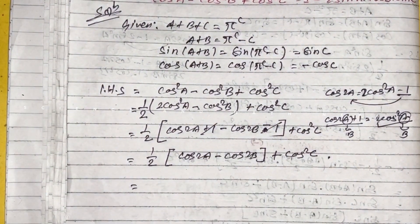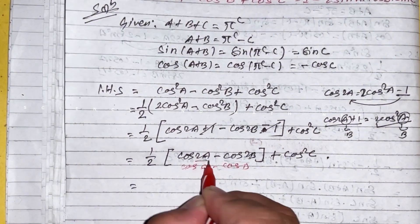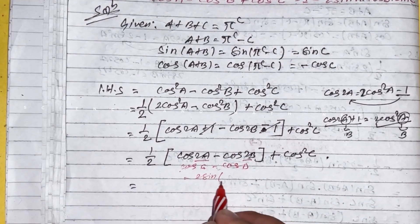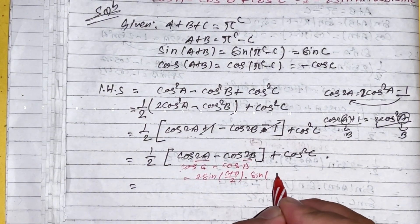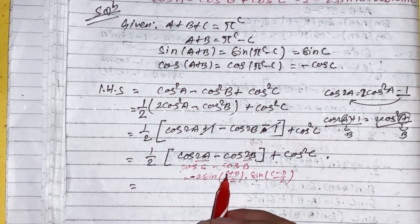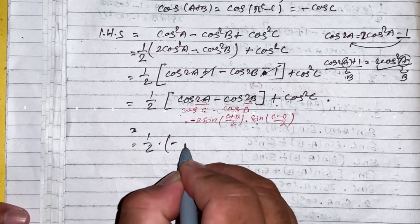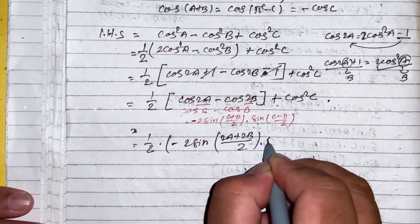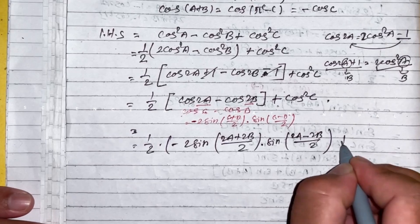Applying the formula for cos 2a minus cos 2b: this equals 2 sin(2a plus 2b divided by 2) into sin(2b minus 2a divided by 2), which simplifies to minus 2 sin(a plus b) sin(a minus b), plus cos square c.